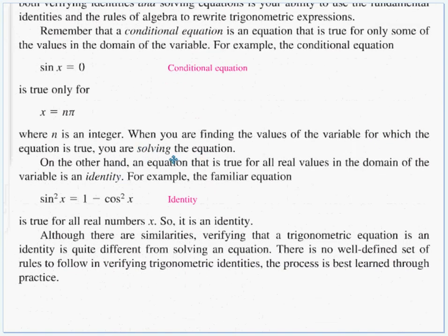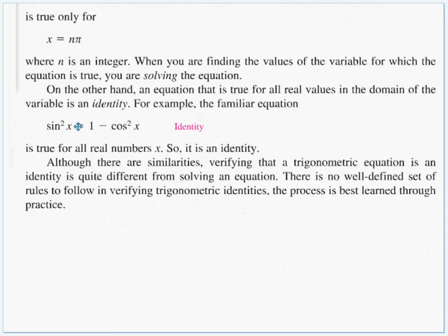Like here, if I write sine of x equals 0, that's only true at values like 0 and 1 pi and 2 pi and 3 pi as we go around the circle. So it's only true for certain values of x. When you're finding the values of the variable in which the equation is true, we are solving the equation for the answers that make it work. On the other hand, an equation that is true for all real values in the domain is an identity.